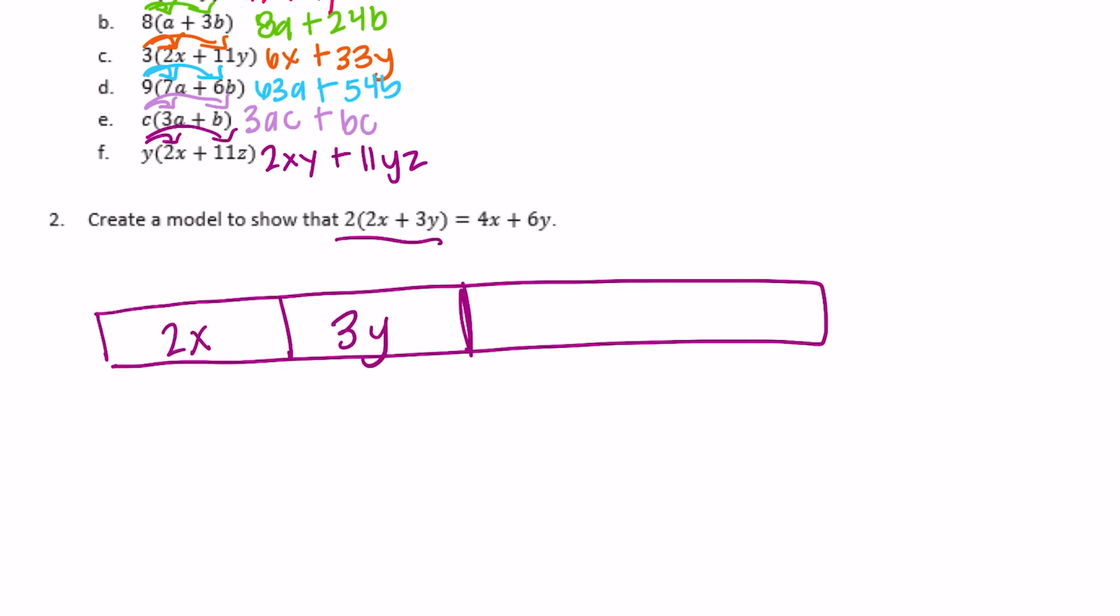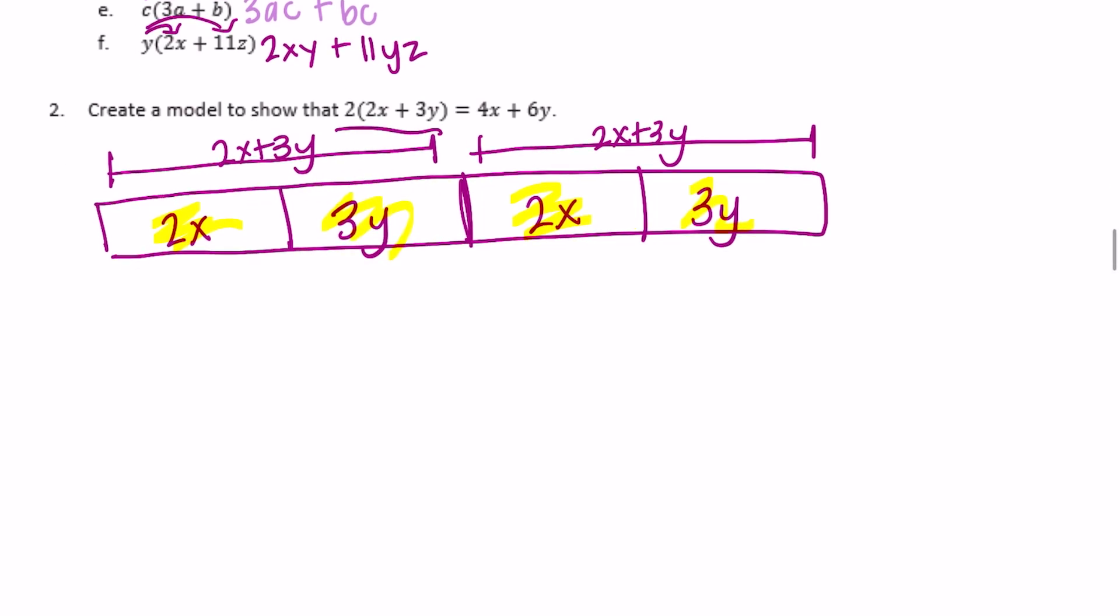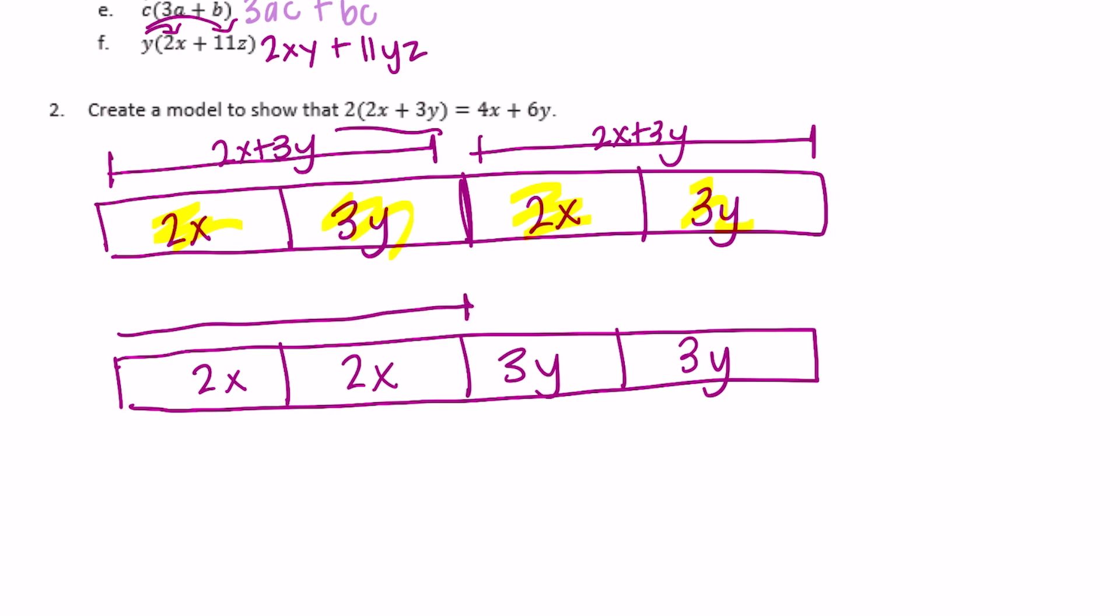So now let's combine them. We have two groups of 2x and two groups of 3y, so I'm going to just rearrange them so that the x's are together and the y's are together. We have two groups of 2x and two groups of 3y. So these 2x's equal 4x and these 3y's are 6y.